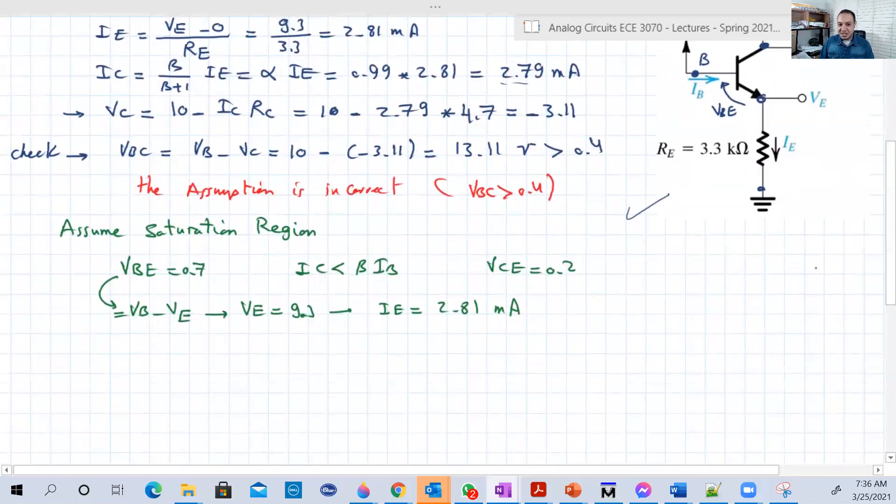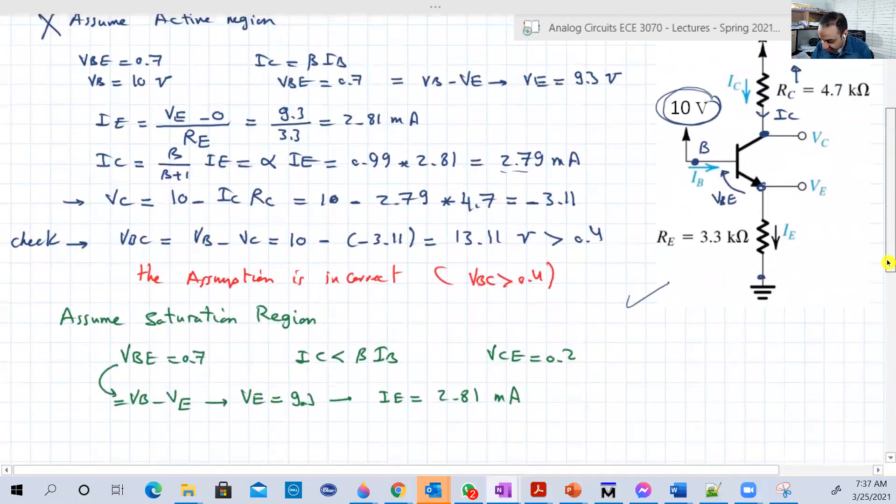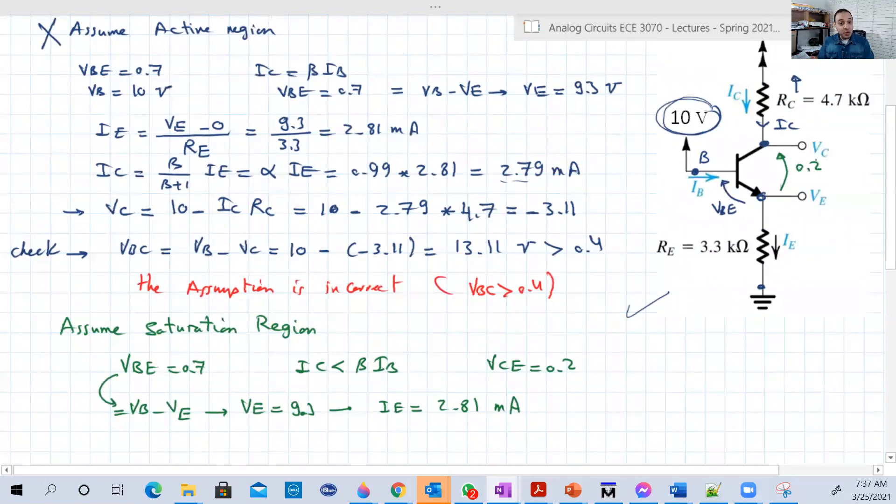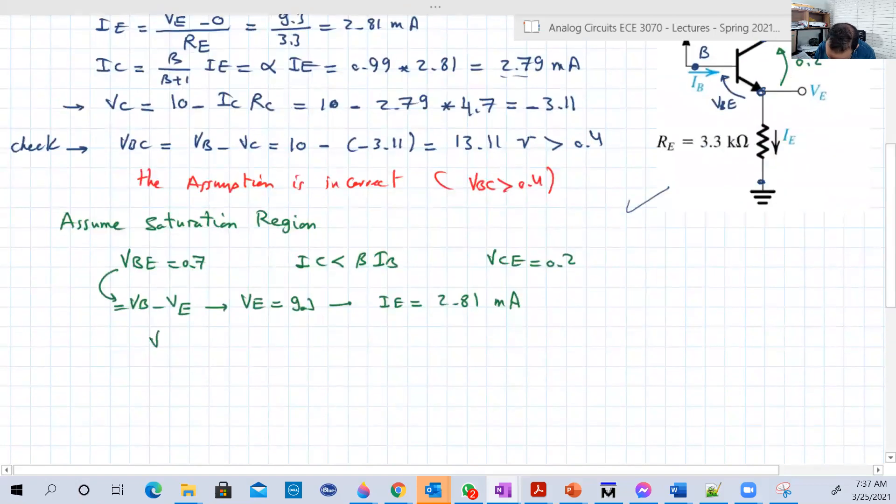Since VBE is 0.7, this is basically equal to VB minus VE. So from that, VE again is 9.3 because still VB is equal to 10. So 10 minus 0.7 is 9.3. So IE is still the same, which is 2.81 milliamperes. But now we cannot say that IC is equal to alpha IE, no, not again, because this is saturation. We know that IC is less than beta IB. We know now VCE. We know the voltage now between these two nodes is 0.2, and we know VE. And we know that VCE is basically VC minus VE. So this is equal to 0.2 and VC is unknown for us, but VE we know, it is 9.3 volts. So from that, VC is equal to 9.5 volts.